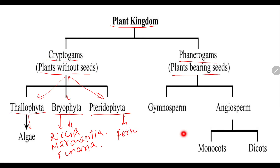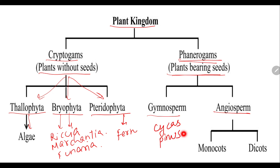Next, we are going to study about the phanerogams. Phanerogams always produce seeds, and they are classified into gymnosperms and angiosperms. In gymnosperms, we study plants like Cycas and Pinus — all these are examples of gymnosperms.